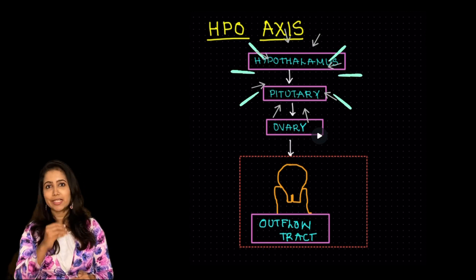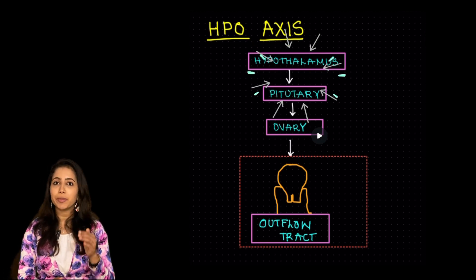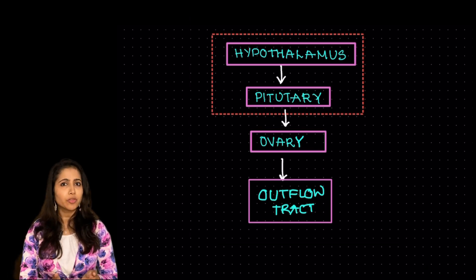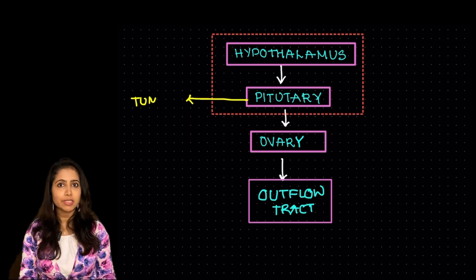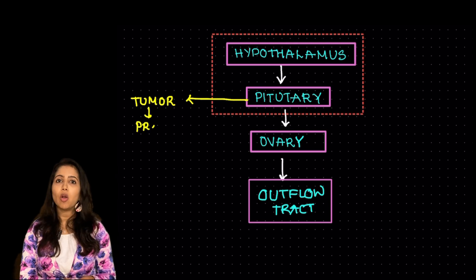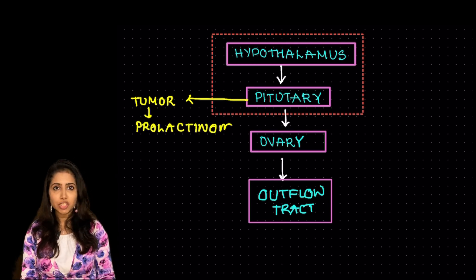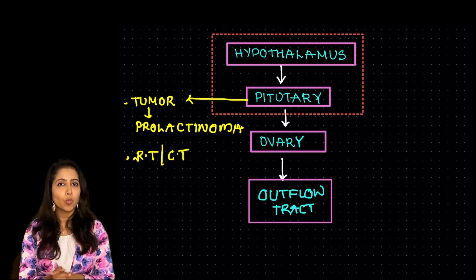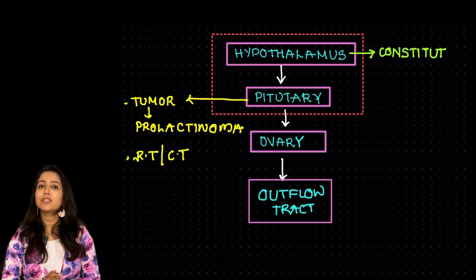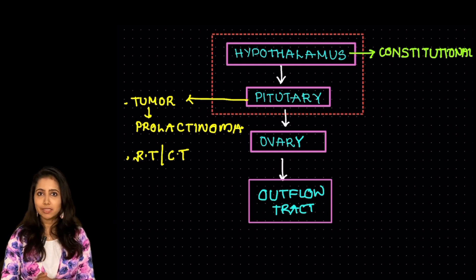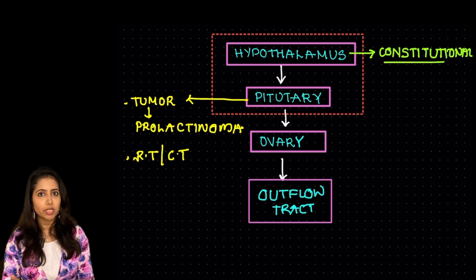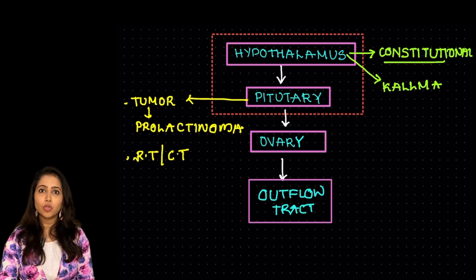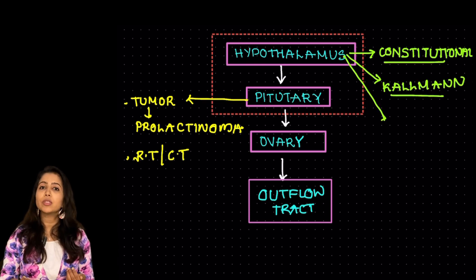Now let's move on to the next level that is at the level of hypothalamus and pituitary. So at the level of pituitary it could be either due to some tumors such as prolactinoma or it could be due to some radiation, some chemotherapy medicines due to which the pituitary is not working properly. At the level of hypothalamus this could be constitutional that is it's a diagnosis of exclusion where we don't find any other cause. It could be due to Kallmann syndrome or due to some tumors.